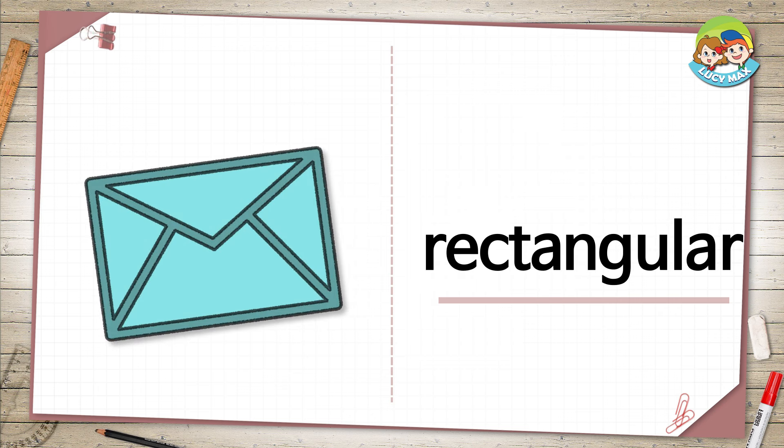Rectangular. Look at the envelope. All four corners have the same size angles. The length of two facing lines is the same. We say this shape is a rectangle. So, the envelope is rectangular.